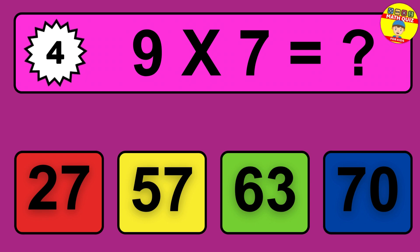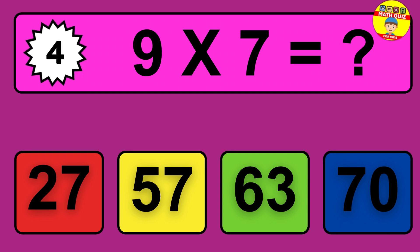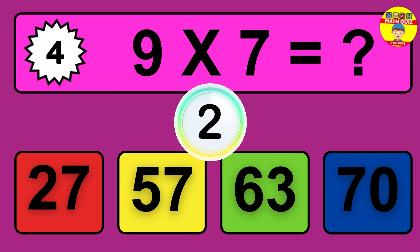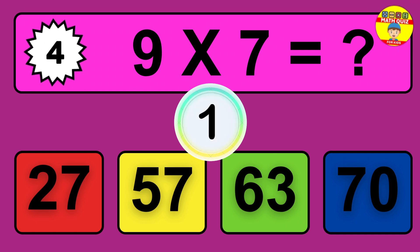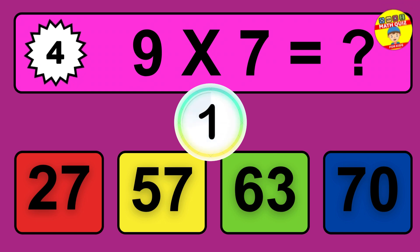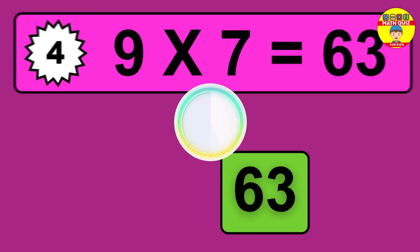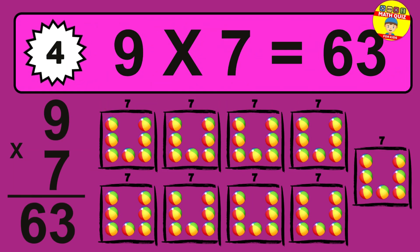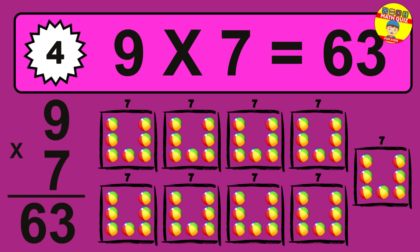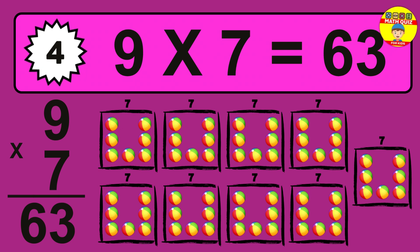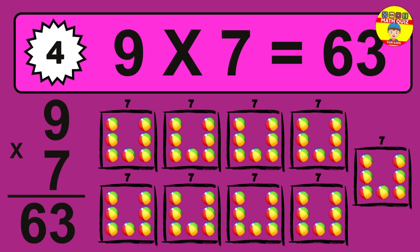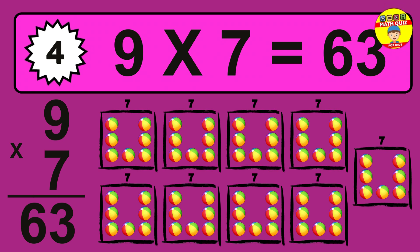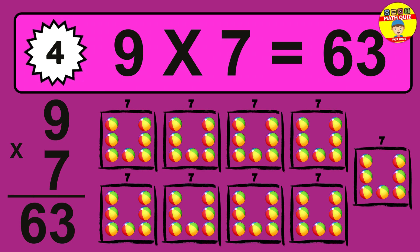Question 4. 9 times 7 equals what? The answer is 9 times 7 is 63. To calculate, we have 9 groups with 7 balls each one. So how many balls do we have? 63 balls.